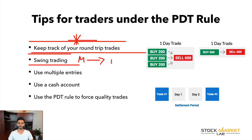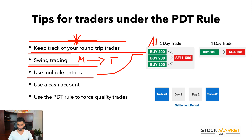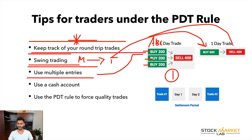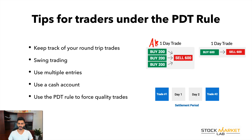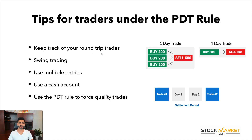Next, you can try to swing trade — buy a stock Monday and look to sell it on Tuesday or Wednesday. Third, you can use multiple entries. Instead of taking on a large position initially, take on smaller positions. For example, if I buy stock ABC — 200 shares, 200 shares, 200 shares — and sell all 600 at once, that's only one day trade. But if I buy 200, 200, 200 and sell in two separate transactions of 300 and 300, that is considered two trades. Note this only applies to that same stock and security.